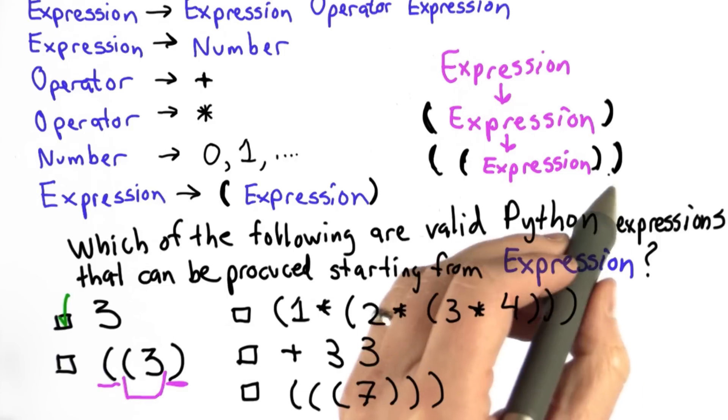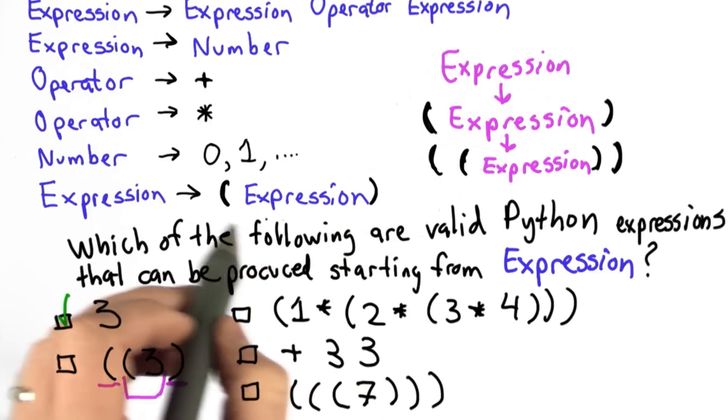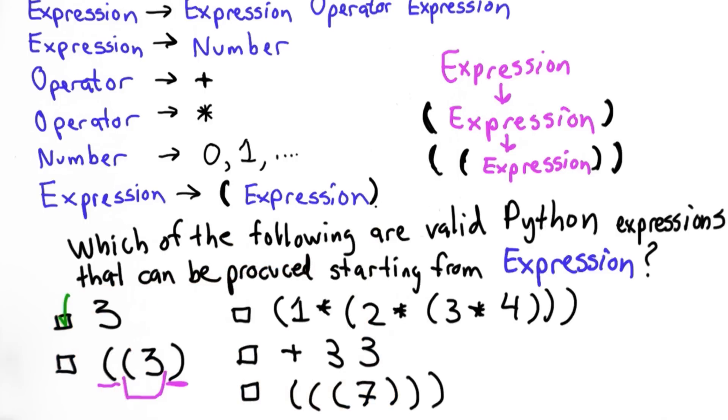This isn't going to match here because we need two right parens to match. And the essence of this rule is that every time we open a parentheses, we have to eventually close it. So we can't produce expressions where the parentheses aren't balanced. So this is not a valid Python expression.